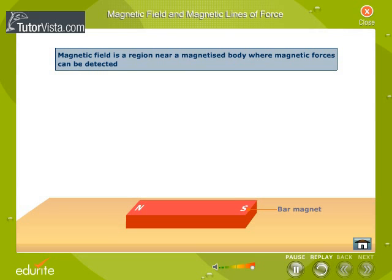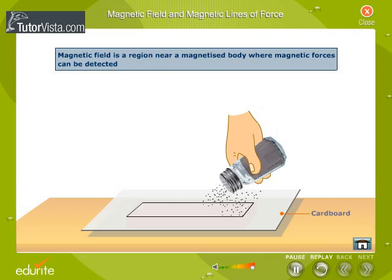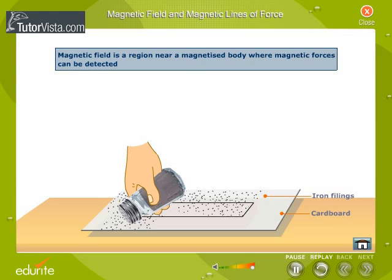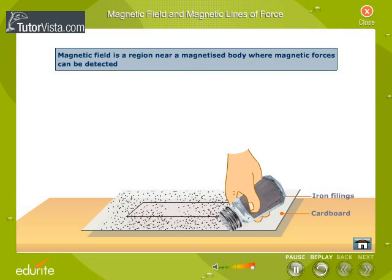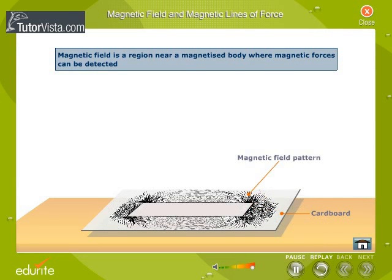Let us understand the concept of magnetic field with the help of an activity. Place a cardboard over a magnet. Sprinkle some iron filings on the cardboard. Tap the cardboard gently. We observe that the iron filings align themselves in definite patterns. These patterns indicate the magnetic field of the magnet.